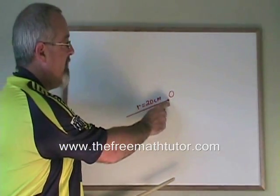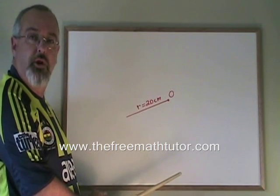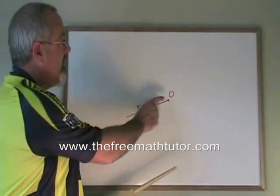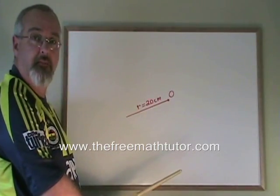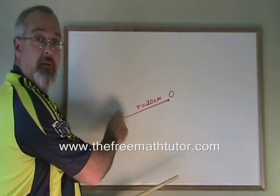At one end of it, I have put a dot and I have labeled that dot with the letter O, which by convention is usually the label for the center dot of a circle. This will be the middle of our circle and the outside of the circle will be this far away from it.